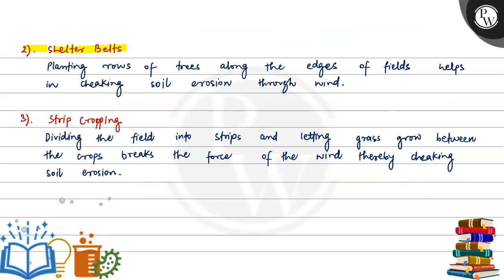Second method is shelter belts. Planting rows of trees along the edges of fields helps in checking soil erosion through winds.